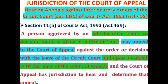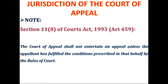Whenever you file any appeal — whether against an interlocutory decision of the Circuit Court to the Court of Appeal, or against a decision of the High Court to the Court of Appeal — there are what we call conditions of appeal. Under Section 11, Subsection 8 of the Courts Act 1993, Act 459, it says: 'The Court of Appeal shall not entertain an appeal unless the appellant has fulfilled the conditions prescribed in that behalf by the rules of court.' So even though you may appeal against a decision, it doesn't mean automatically the Court of Appeal shall entertain your appeal; you must have fulfilled the prescribed conditions.